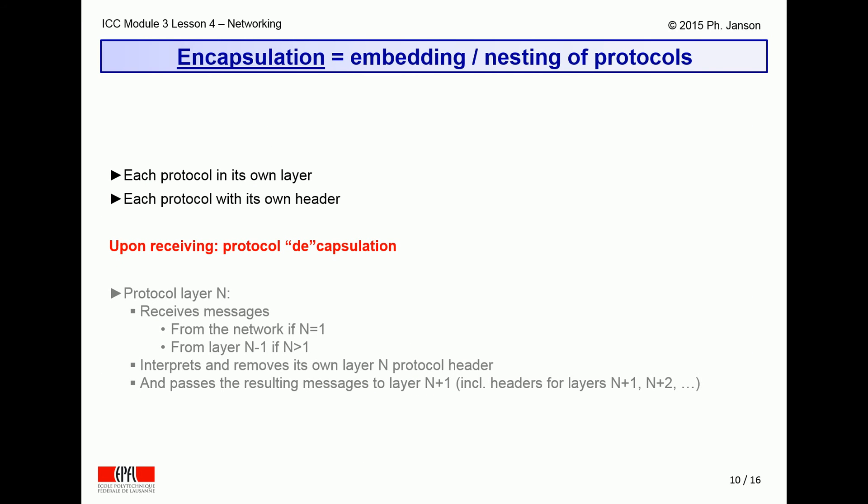On the receiving side, the process is simply reversed. Protocol layer N receives a message from layer N-1, or over the physical layer connection if N is equal to 1. It processes the incoming layer N protocol header and removes it from the message before pushing it up to the protocol layer N+1, together with the still-attached layer N+1 and other headers.